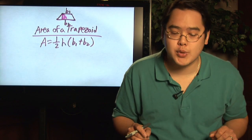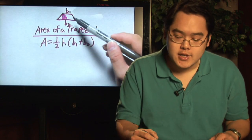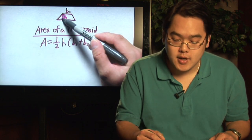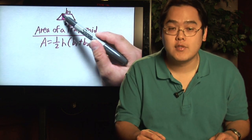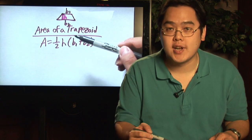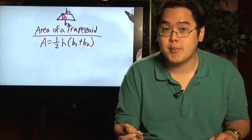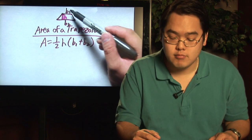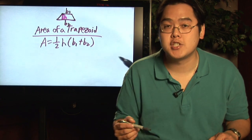Now just to kind of review what a trapezoid looks like, you have a shape that's kind of like this. The height of the trapezoid, of course, is from all the way up all the way down. It's a straight line. And remember, a trapezoid has two bases: B1, the base on top, and B2, which is the base on the bottom.